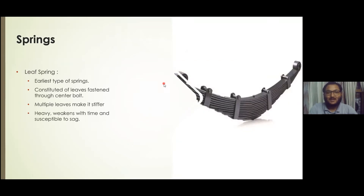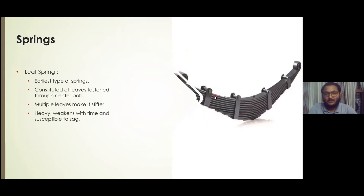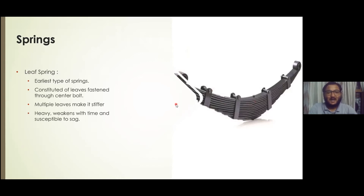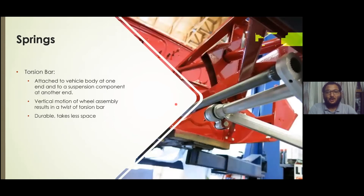The first type of spring is the leaf spring. It is one of the oldest types of springs and consists of multiple leaves that are bolted together. As we add more leaves, the stiffness of the spring increases. These can be observed in heavy vehicles such as buses and trucks, and they are susceptible to sagging.